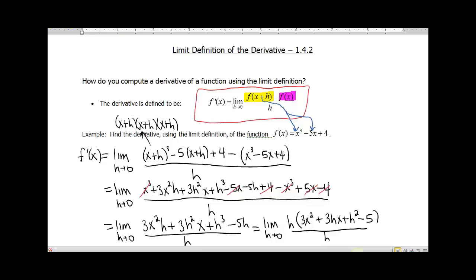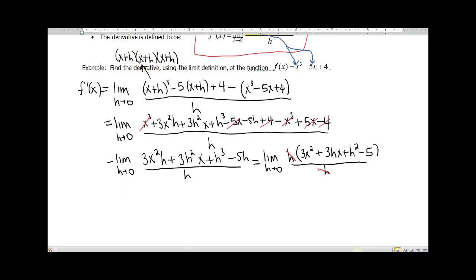Now we can go ahead and cancel those h's. And we end up with the limit as h approaches 0 of 3x² + 3hx + h² - 5.